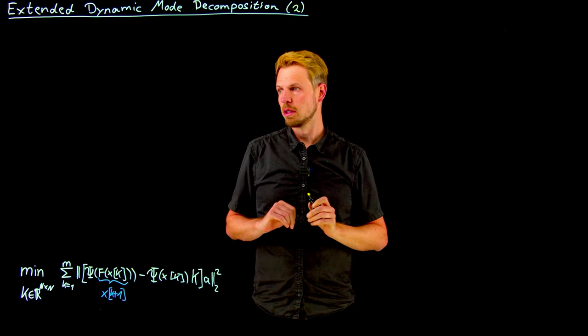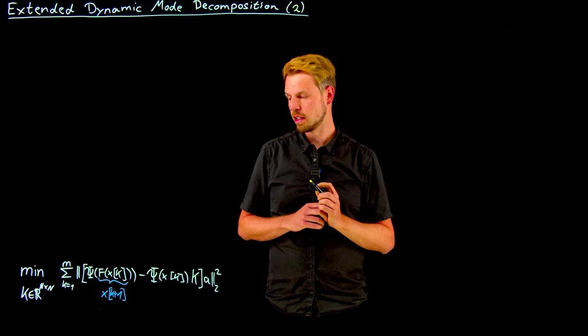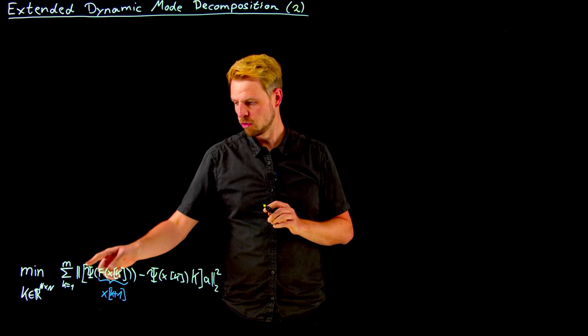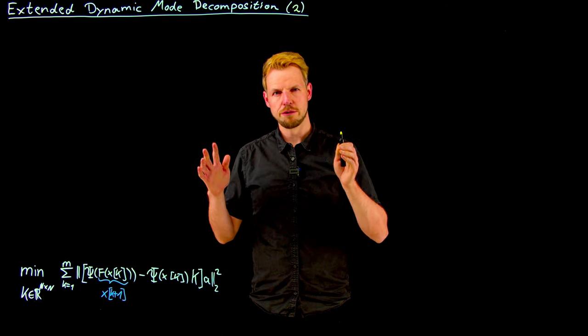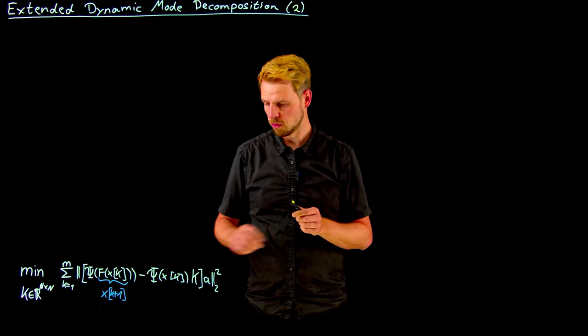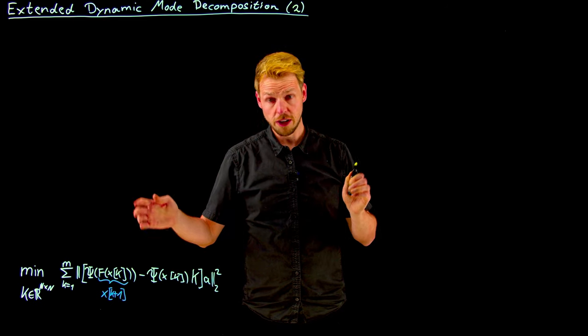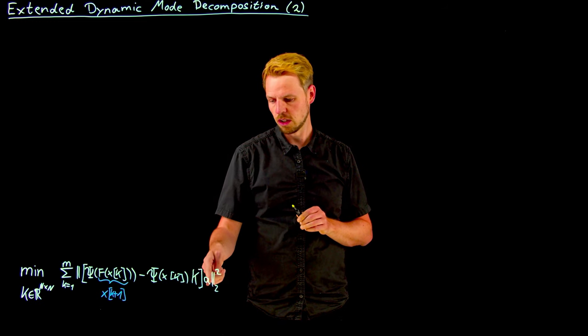Where we left off in part 1 was this linear regression problem that we had identified when we want to study an observable psi that can be expressed in terms of a finite basis. So this psi capital X was a vector of basis functions evaluated at these x points and then multiplied by a coefficient vector a.